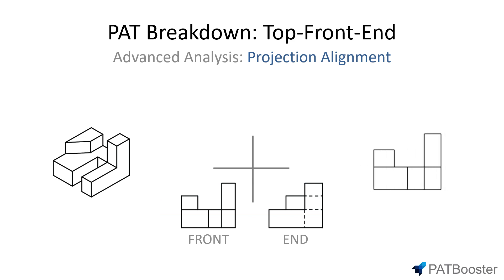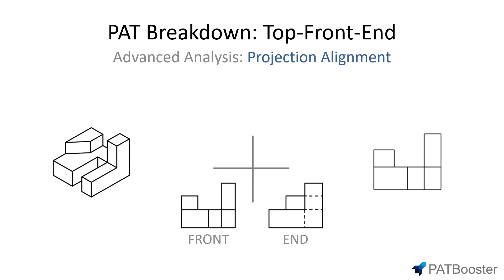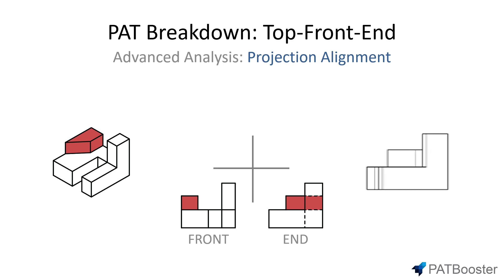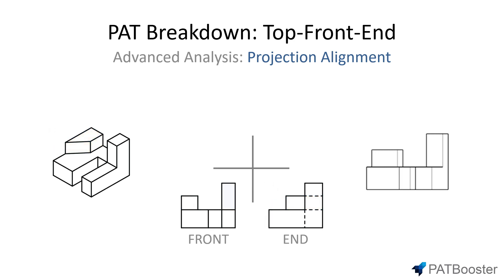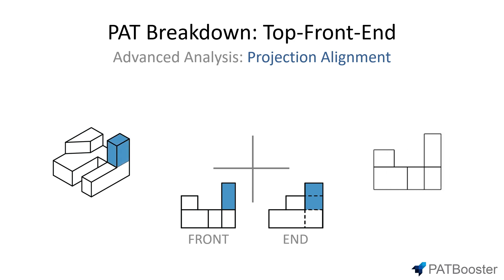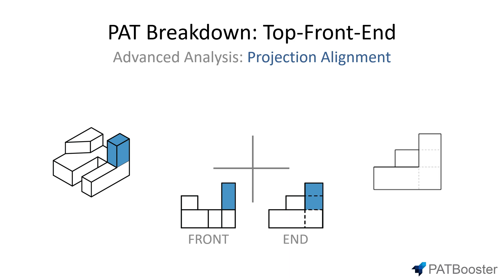This helps us identify what is what in each view, which is super useful when you're trying to mentally visualize the object. For example, using the height tiers, I can easily tell that this extension here corresponds to this extension here, because they are both the only extensions on the second height tier. From the top view — which is what I'm trying to answer — I'd know that this extension would only extend up to this point, not all the way to the edge. Similarly, this extension on the front view matches up with this extension on the end view because they're both on the third height level.